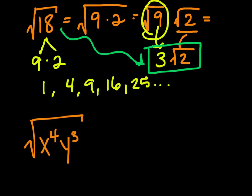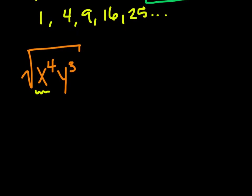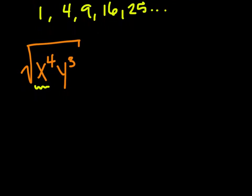Let's look at the next one: the square root of x to the 4th times y to the 3rd. x to the 4th is not quite as simple as the number 18. However, we can find squared variables within x to the 4th. If we think about x to the 4th, we could rewrite it as x squared times x squared.